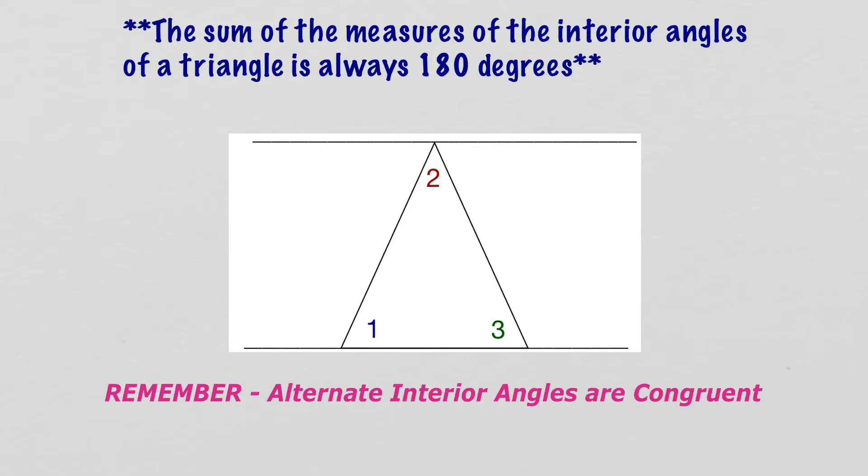Don't forget that alternate interior angles are always congruent. Now remember, alternate interior means the angles on either sides of a transversal when we have parallel lines. So if angle one is right here, angle one has an alternate interior angle right up here. Now remember, congruent means equal. So that means that I could call this angle one because it's the same exact measure. Now we can take it and look at angle three and that has an alternate interior angle right here. So we could label that one as angle three.